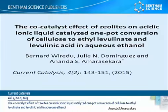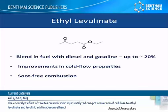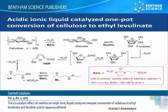Ethyl levulinate is a 7-carbon keto-ester that can be used as a blending fuel with gasoline and diesel. Currently, ethyl levulinate is prepared in low yield by the two-step acid catalysis method. In this publication, we describe a more efficient one-pot conversion of cellulose to ethyl levulinate.